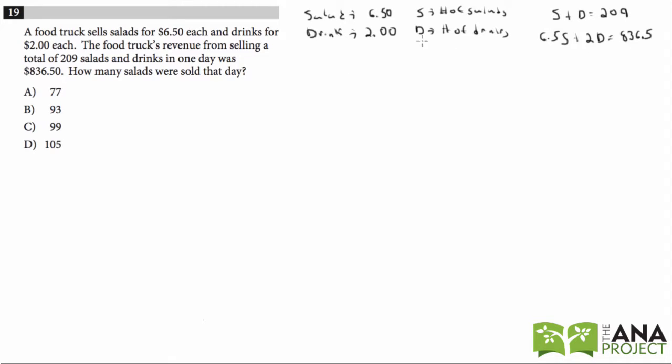So again, we're given a systems of equations problem. The only kink in this one is that they give us a couple sentences and we have to translate the sentences into equations. So just like in number 9 in section 3, there are several different ways to do this.